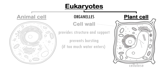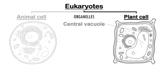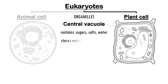A large part of many plant cells is taken up by a central vacuole. This is a fluid-filled sac that contains cell sap — a mix of sugars, salts, and water. The vacuole acts as a storage space for nutrients and waste.